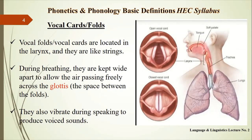Vocal folds, or vocal cords, are located in the voice box called the larynx. For breathing, they are kept apart and allow the airstream to flow freely through the glottis — the space between the vocal folds. For speaking, the vocal folds play an important role because they produce voiced and voiceless sounds. When the vocal folds vibrate, voiced sounds are produced.